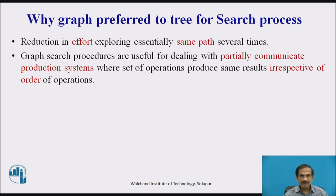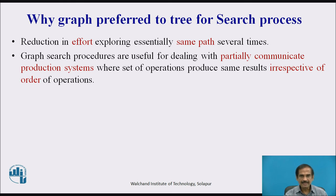The graph is preferred over a tree for the search process because it reduces the effort of exploring essentially the same paths multiple times. Graph search procedures are used for dealing with partially commutative production problems, where the set of operations produces the same results irrespective of the order of operations. Since we may want to revisit an already-visited node, a graph is preferred, and in artificial intelligence, results have been generated accurately using search graphs.